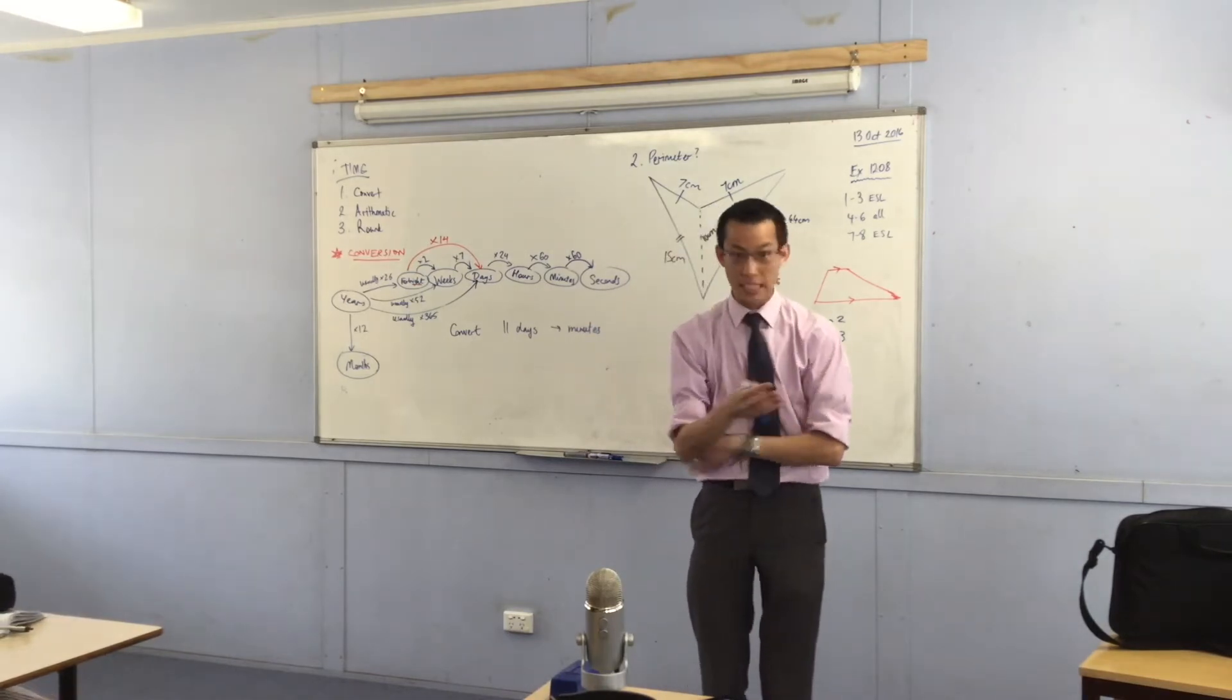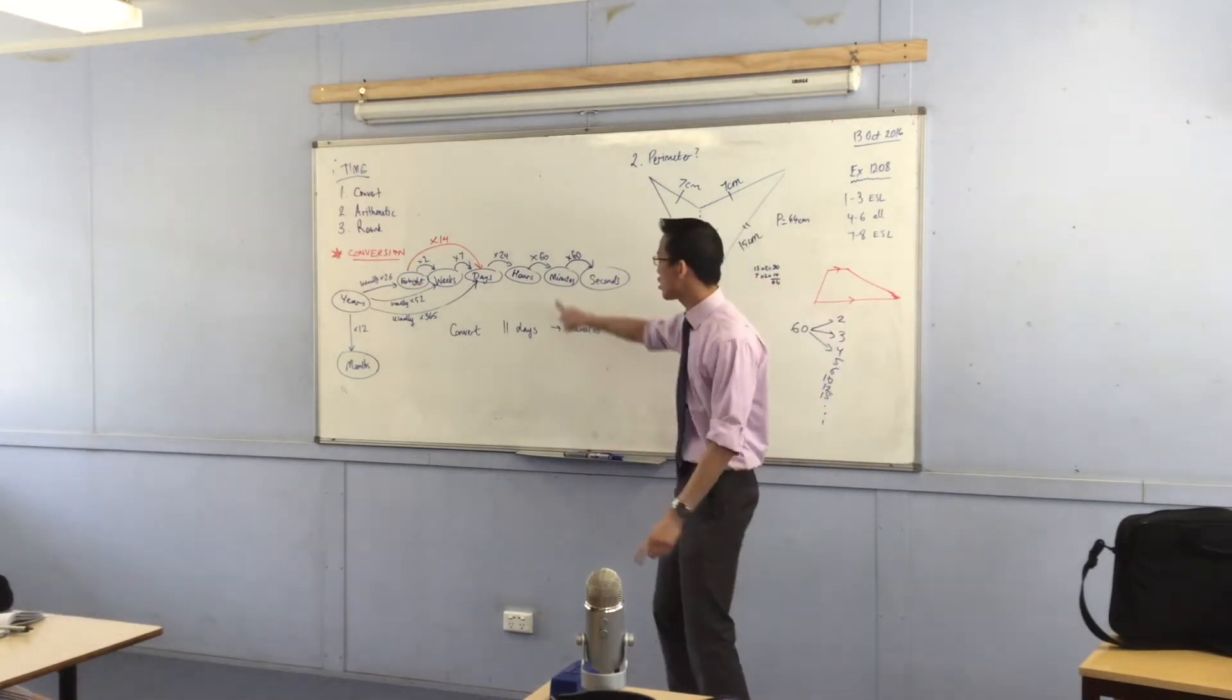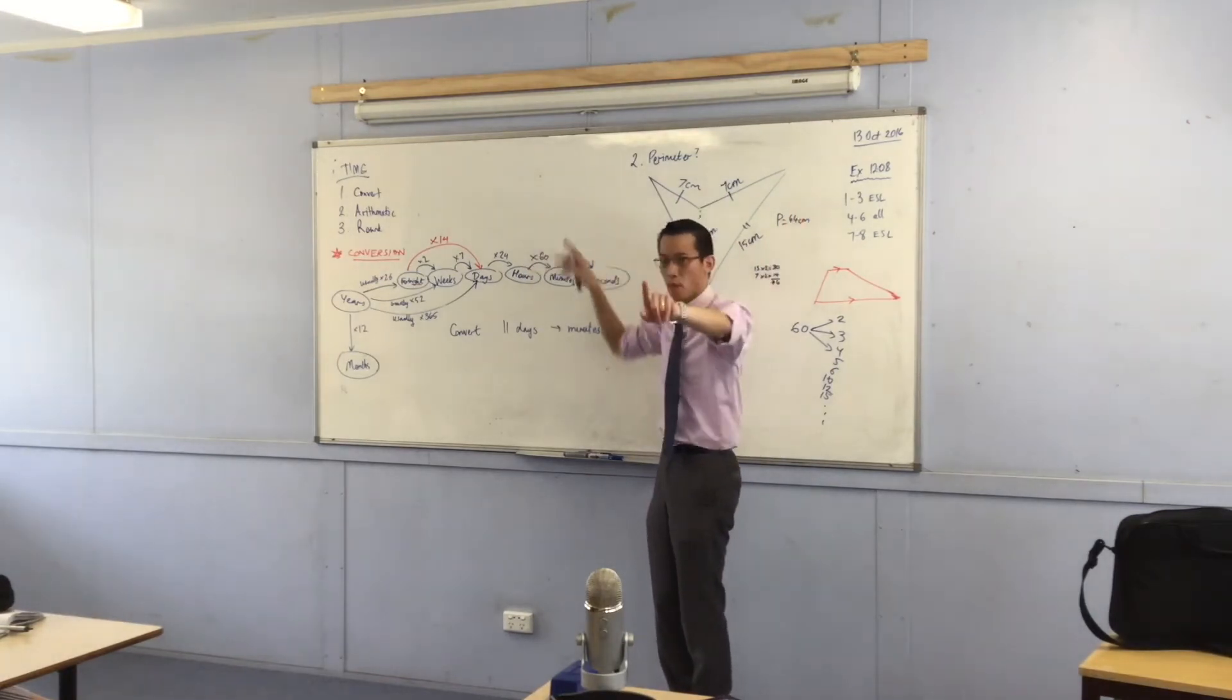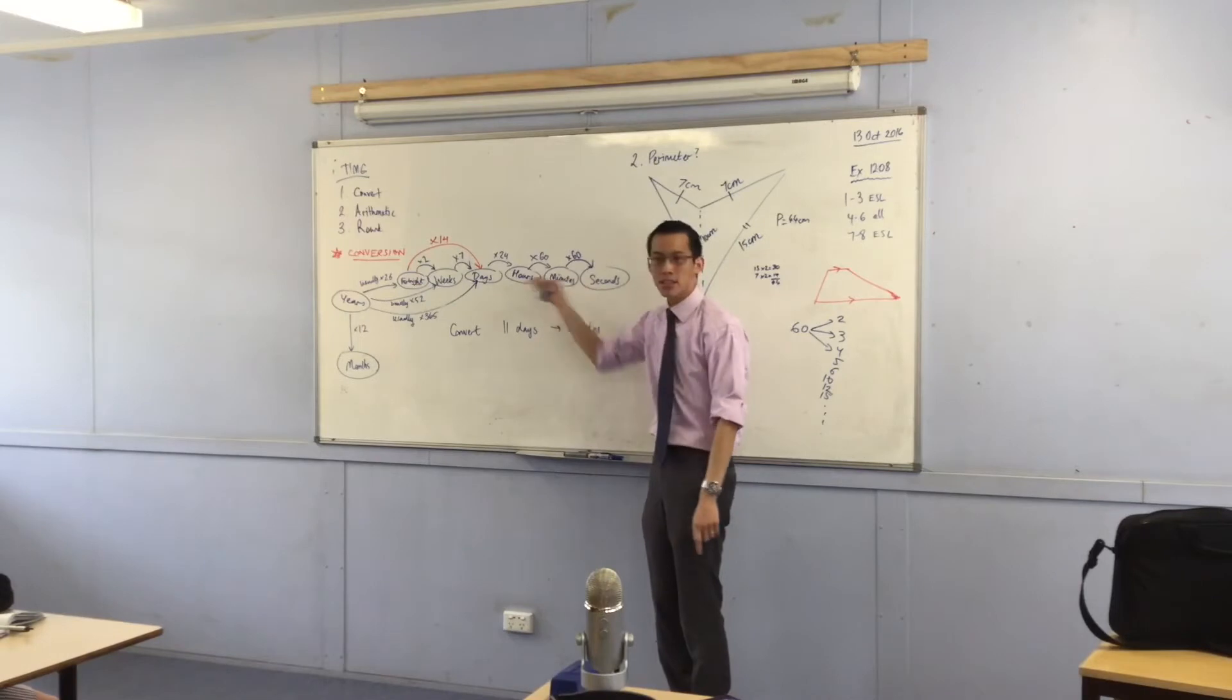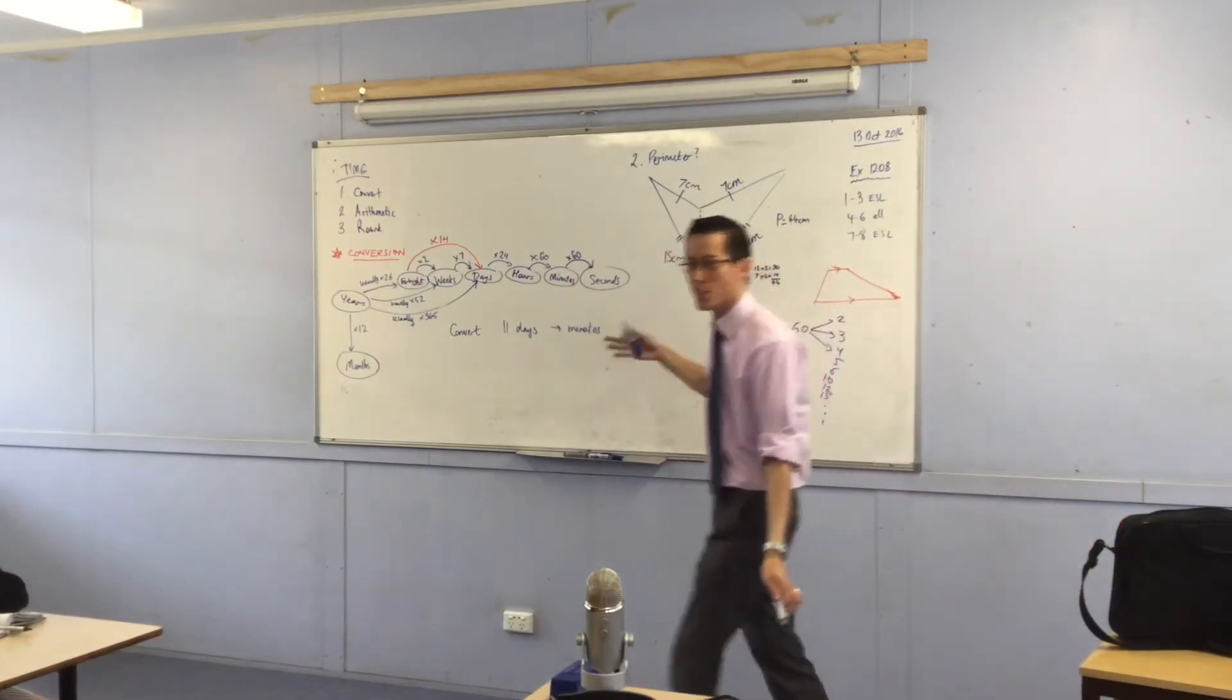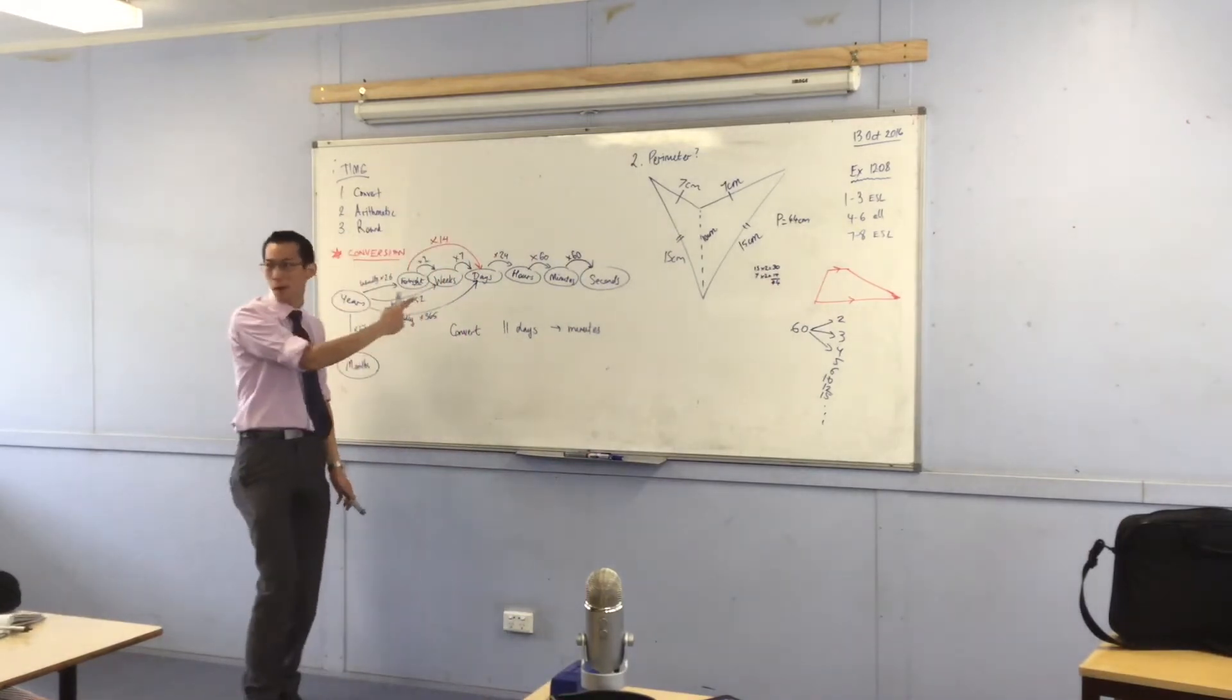It should get bigger. There's lots and lots of minutes, not many days. So I should be multiplying. Do you see why I'm multiplying? I want this number to be huge. Now, before I get an answer, how does this diagram tell me what to multiply by? Someone tell me how to use this diagram before they tell me the answer, because that's the important part.